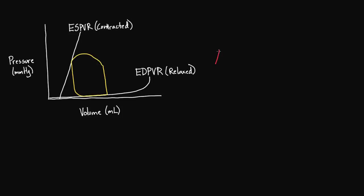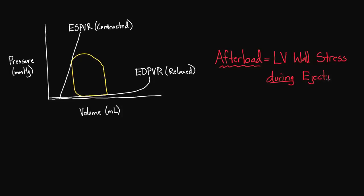Let me throw up the definition of afterload, and we'll look at which part of the pressure-volume loop it corresponds to. The definition of afterload is very similar to the definition of preload — it's left ventricular wall stress. But this time it's during ejection, over a certain time interval when blood is actually being ejected out of the left ventricle. On our graph, ejection begins here and continues to about there, so this entire portion of the curve is considered afterload.